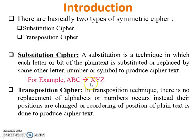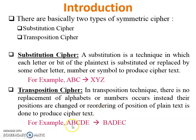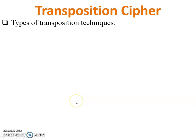In Transposition Cipher there is no replacement of alphabets — only the position of alphabets in the plain text is changed to produce cipher text. For example, ABCDE is the plain text; change the position of alphabets and generate cipher text. So this is the Transposition Cipher.